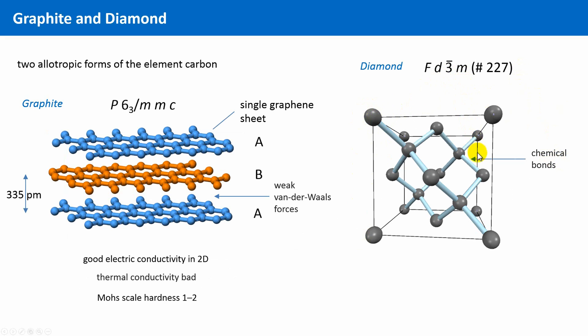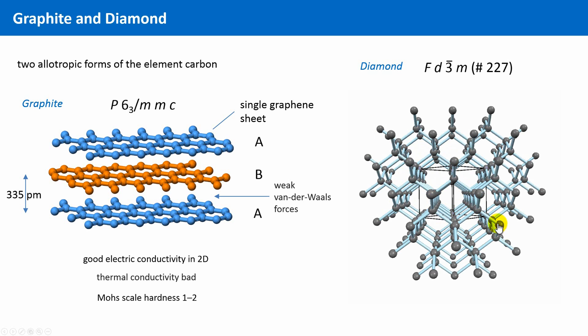We see that each carbon atom is covalently, this means chemically bonded to four neighbors in a tetrahedral fashion, which gives rise to a fully connected network in three dimensions.